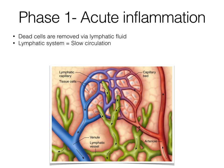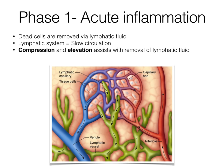The lymphatic system has a very slow circulation. Unlike the circulatory system, which has the heart as a pump to circulate blood around the body, the lymphatic system does not have a pump to circulate its fluid. So it is very slow, and any dead and dying tissue needs to be removed via the lymphatic fluid.